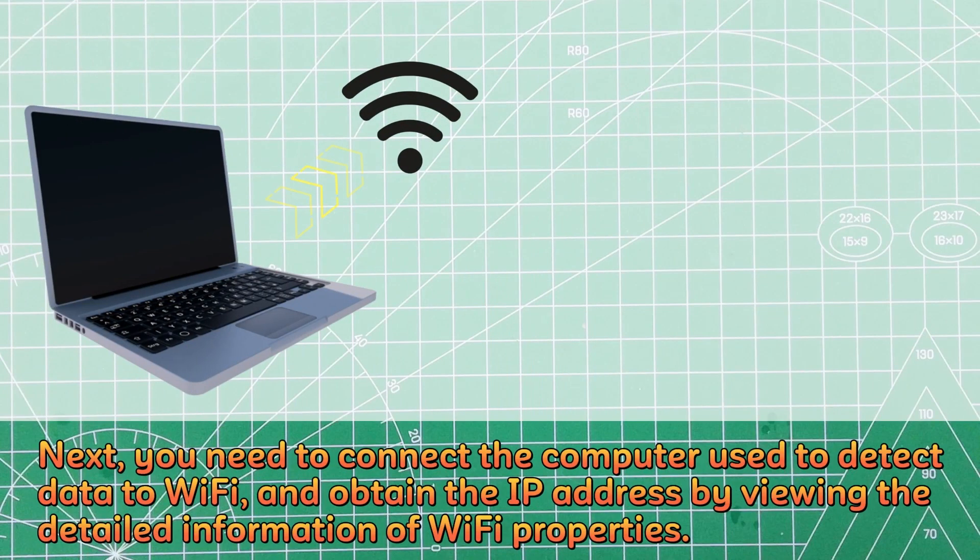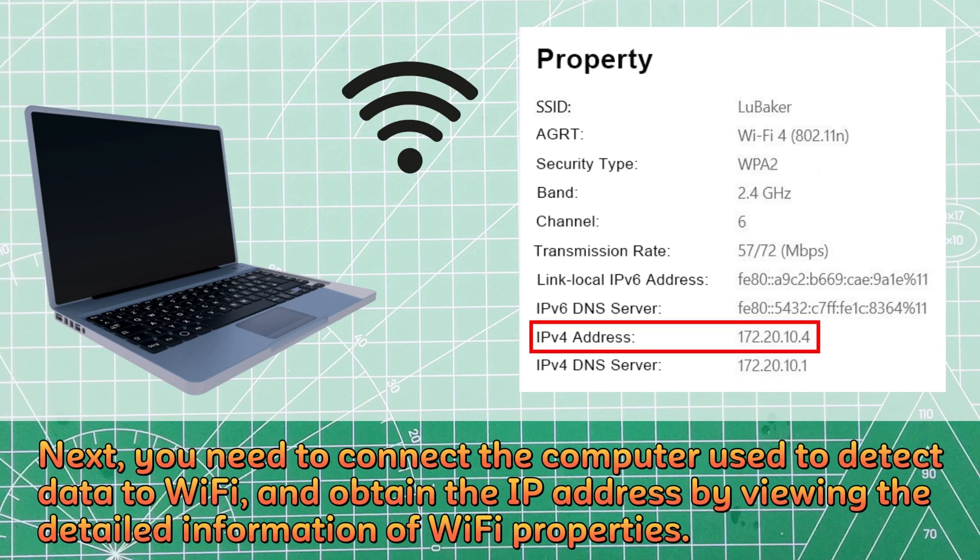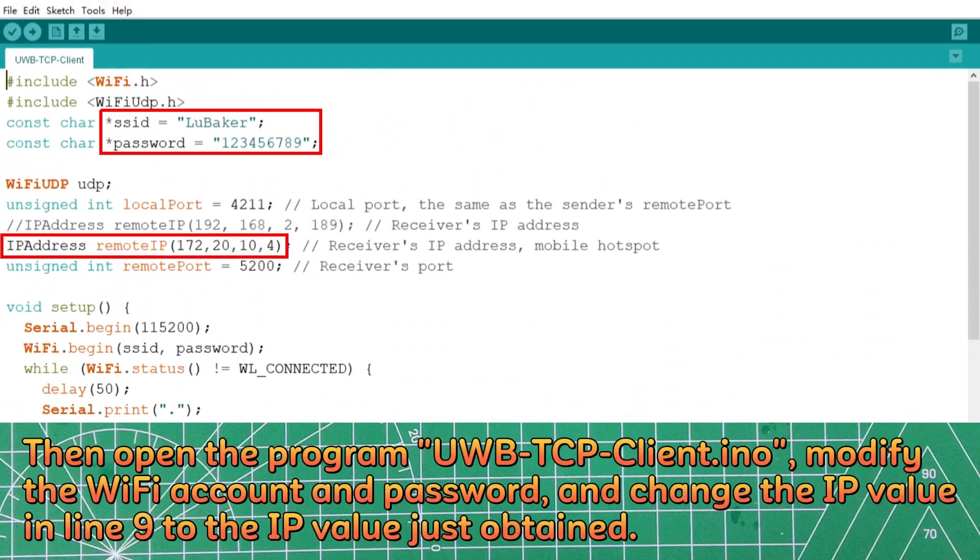Next, you need to connect the computer used to detect data to Wi-Fi and obtain the IP address by viewing the detailed information of Wi-Fi properties. Then open the program uwbtcpclient.ino, modify the Wi-Fi account and password, and change the IP value in line 9 to the IP value just obtained.